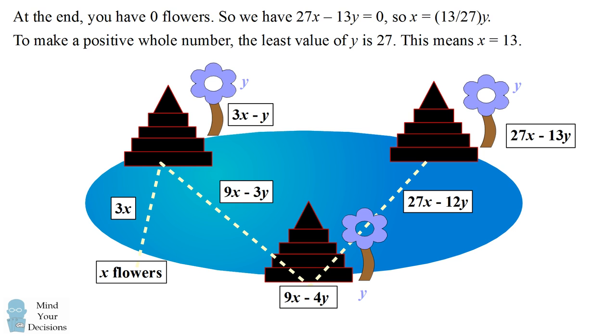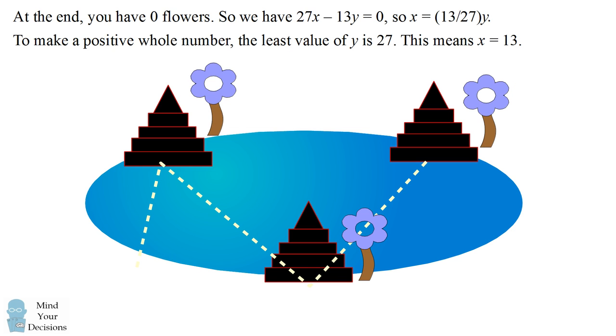In fact, this is the solution. We will verify this numerically. If we start out with 13 flowers, we swim in the pond and that triples to 39. We then leave 27 flowers at the first temple, which leaves us with 12 flowers.